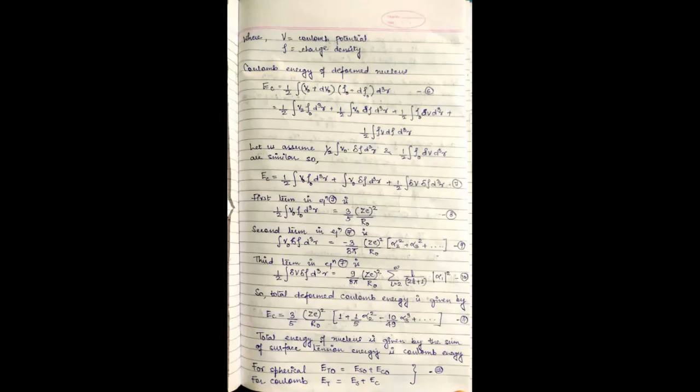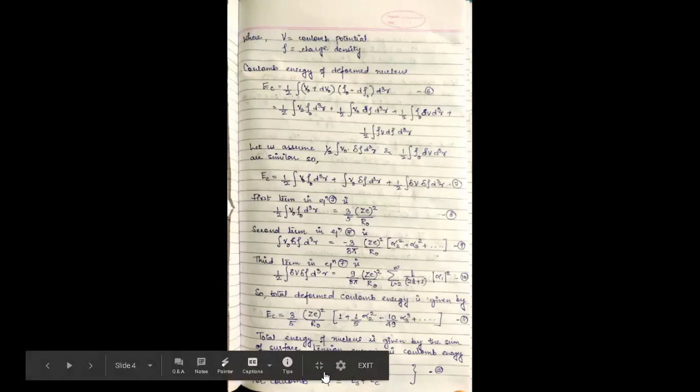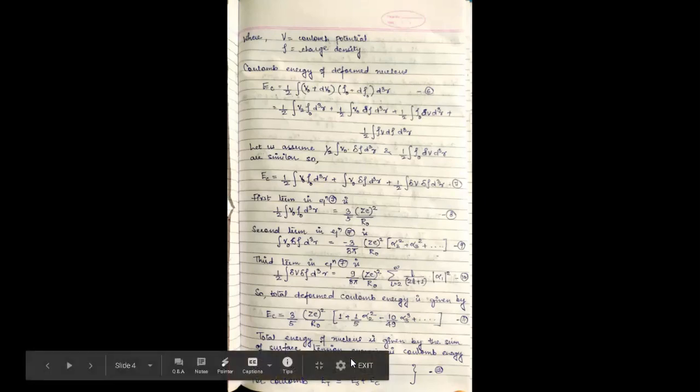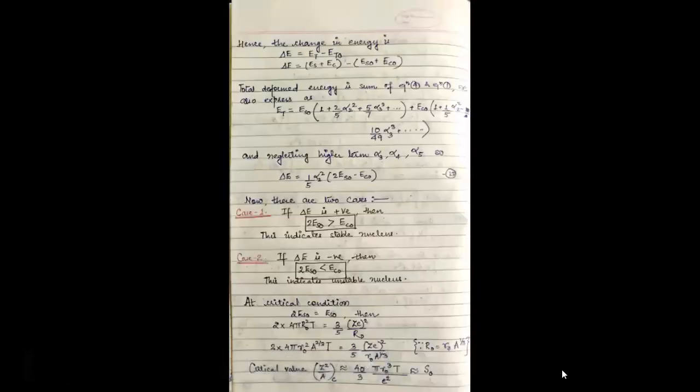Thus the total energy of the nucleus is given by the sum of surface tension energy and Coulomb energy. For spherical ET0 equals ES0 plus EC0 and for the deformed ET equals ES plus EC.